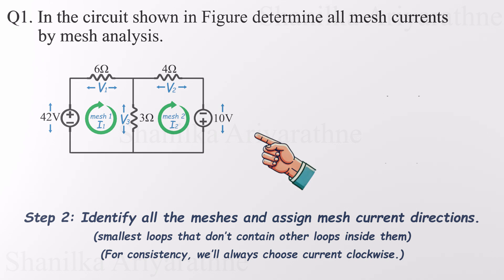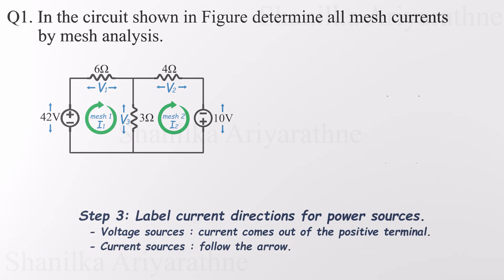Now it's time to label the current directions for the power sources. For voltage sources, current always flows out from the positive terminal. And just for reference, if we had current sources, we'd simply follow the direction of the arrow.